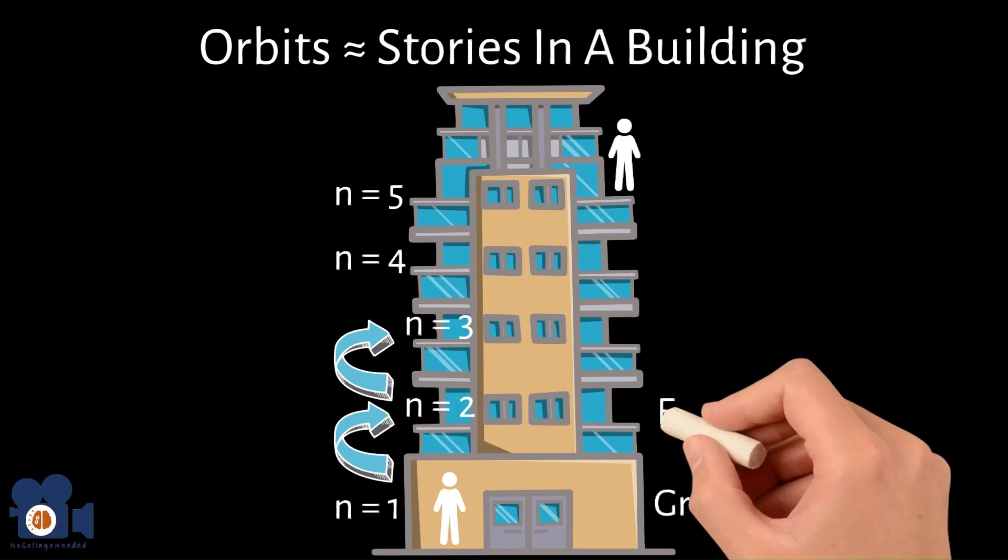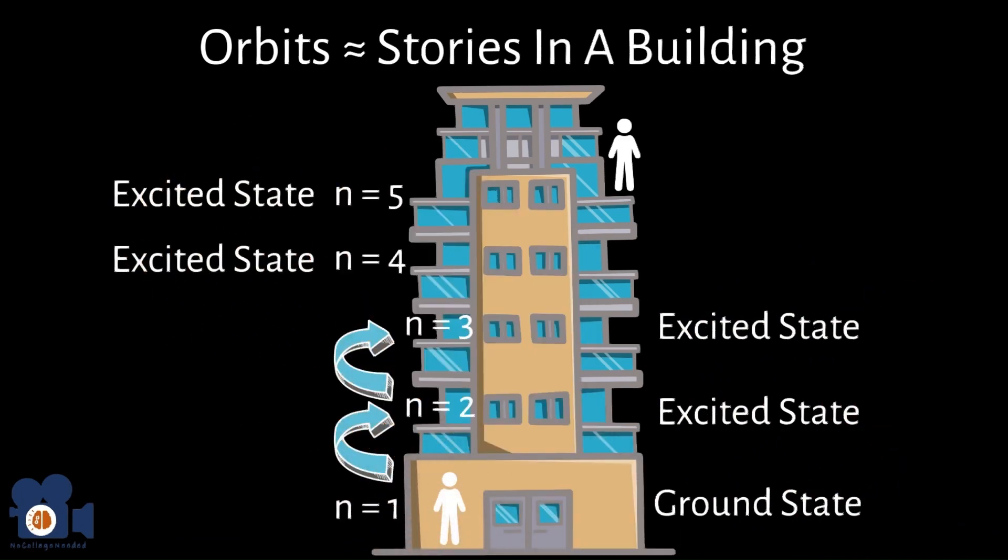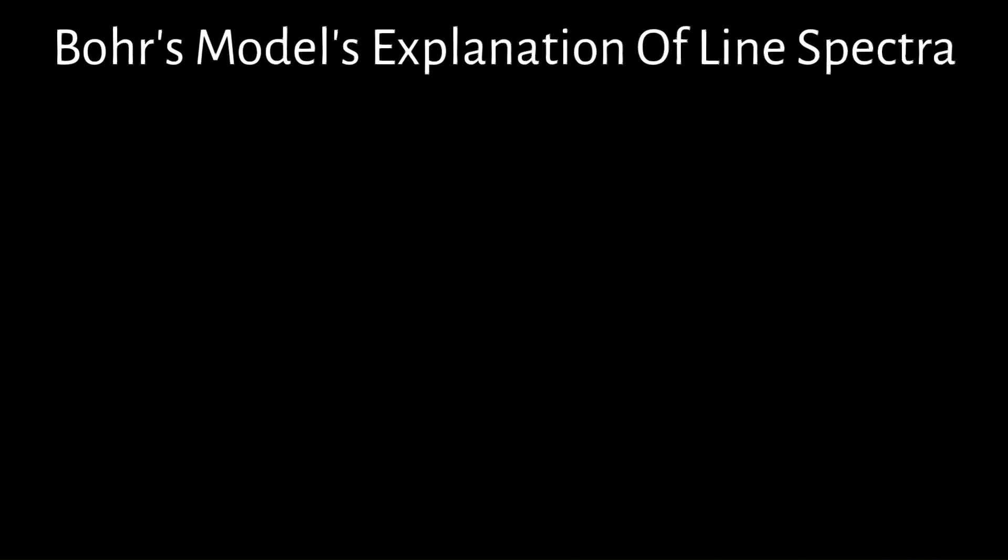States with N greater than or equal to 2 are considered excited states, indicating the higher energy levels. Now let's get to Bohr's model explanation of line spectra.